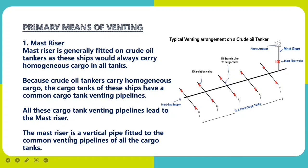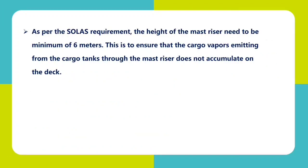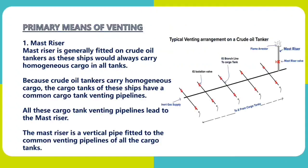The mast riser is a vertical pipe fitted to the common venting piping of all cargo tanks. As per SOLAS requirements, the height of the mast riser needs to be a minimum of 6 meters. This is to ensure that the cargo vapor emitting from the cargo tank through the mast riser does not accumulate on the deck. The height of the mast riser should be at least 6 meters so that when gas escapes, it will not accumulate on the deck.